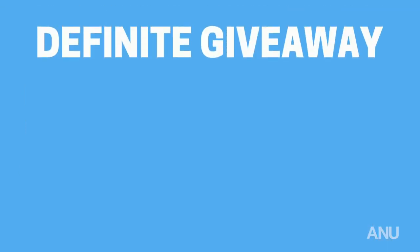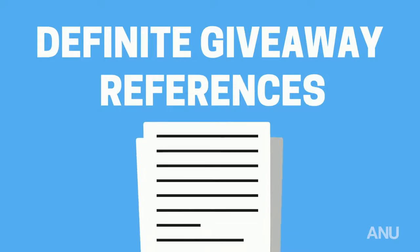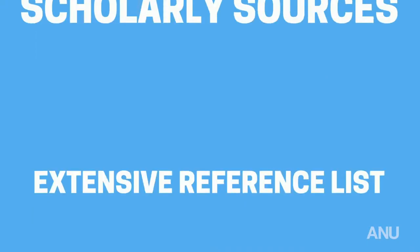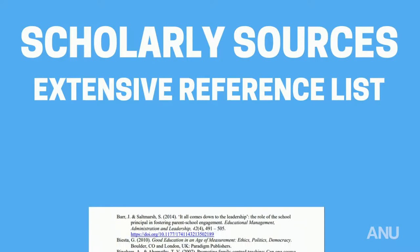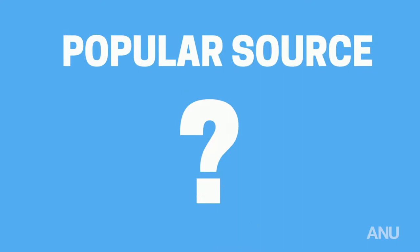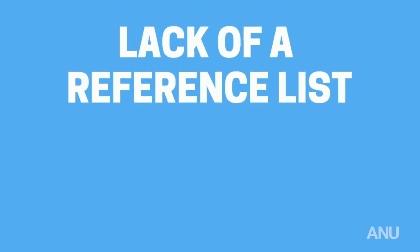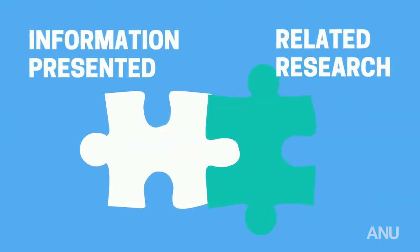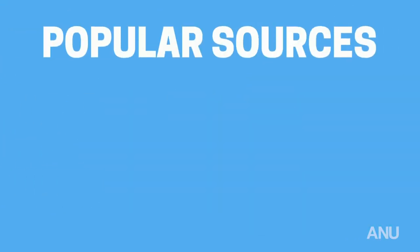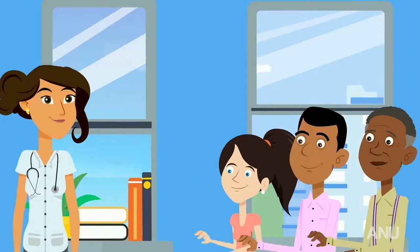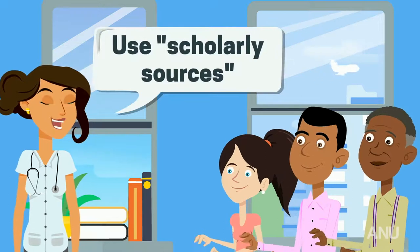Another definite giveaway is references. Popular sources typically do not have reference lists, or they have very minimal ones. Scholarly sources, on the other hand, always include an extensive reference list. So if this is missing, you are probably looking at a popular source. This lack of a reference list — which is critical for linking the information presented in the article to related research — makes popular sources much more difficult to fact-check and trace the origins of the information.